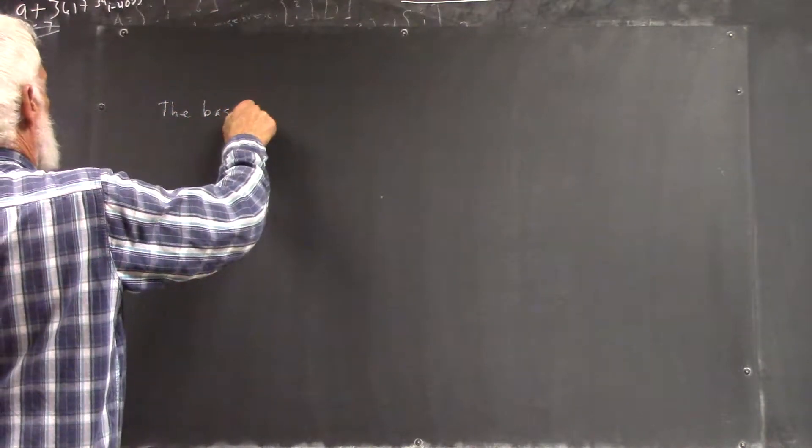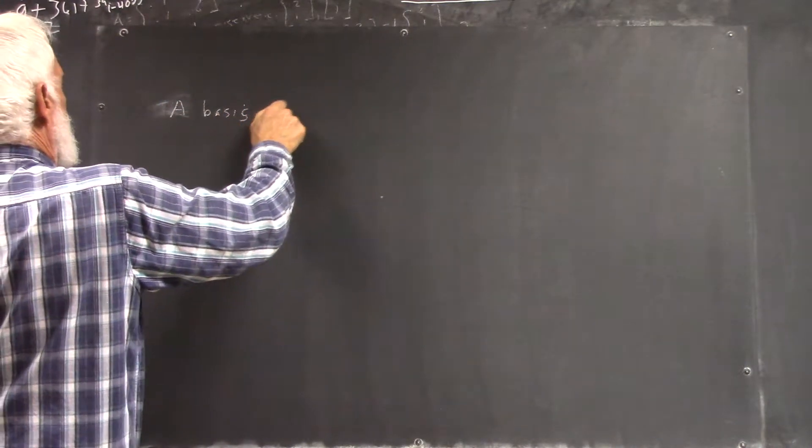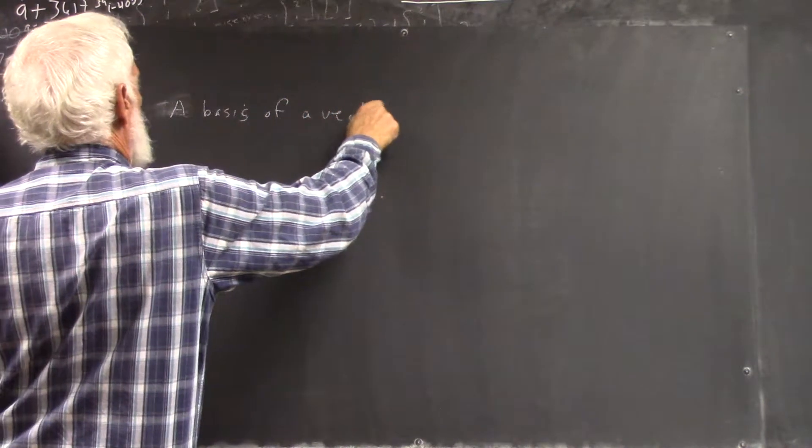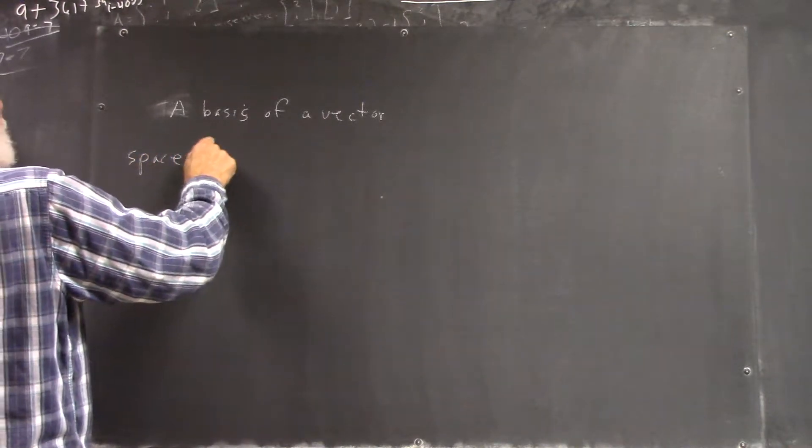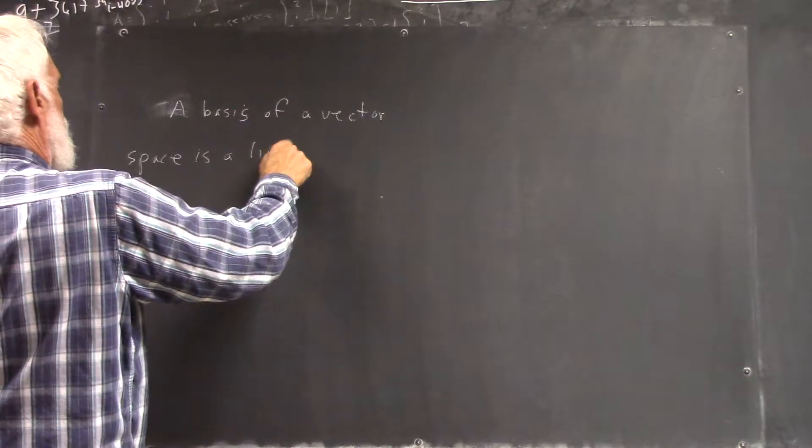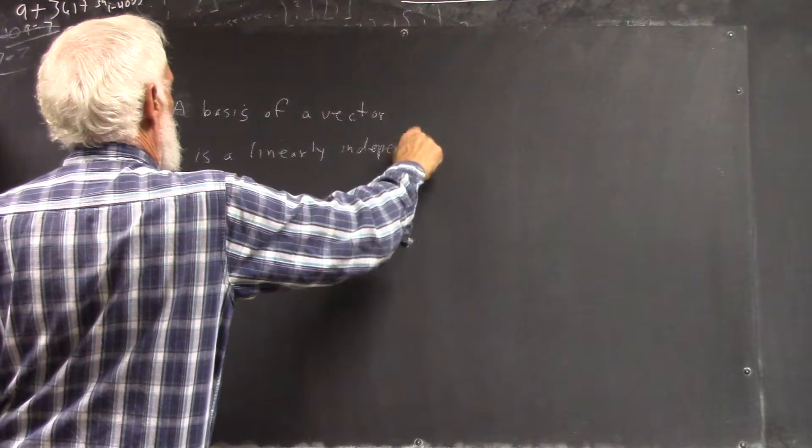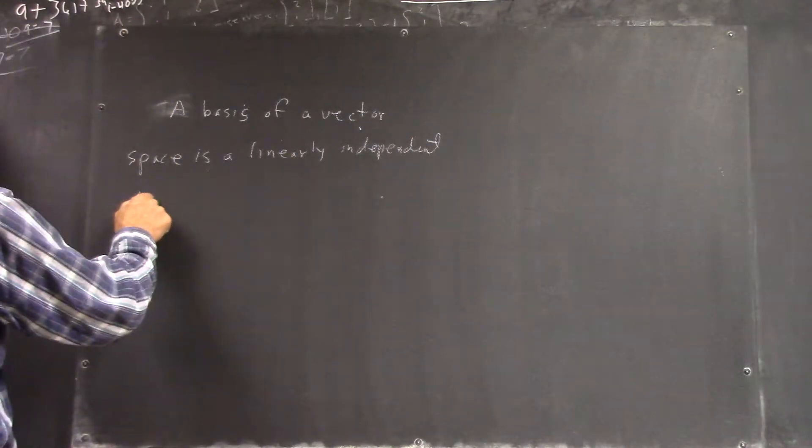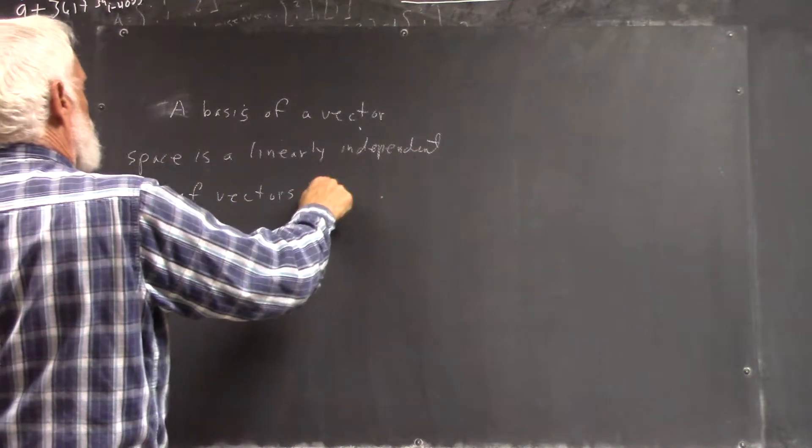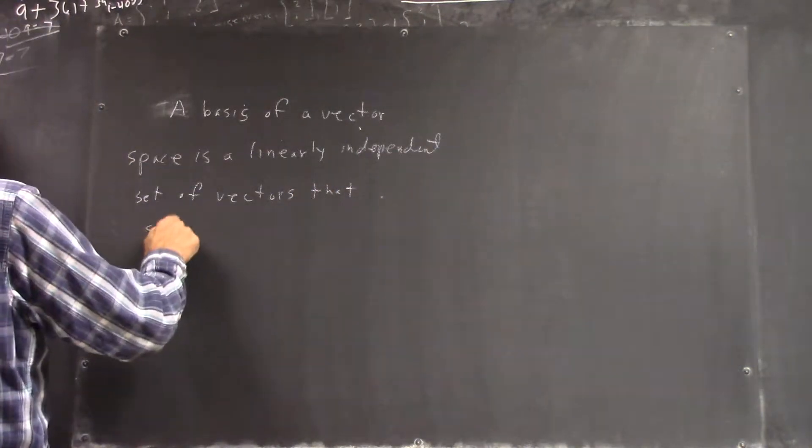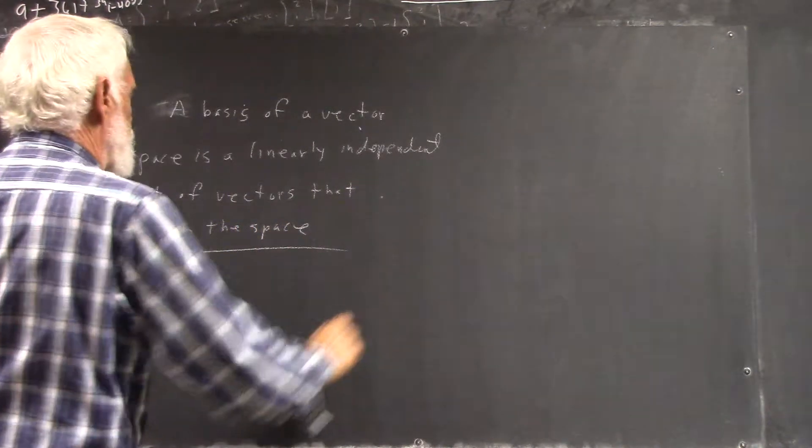We've got the basis, the A basis, and the vector space is a linearly completely independent set of vectors.